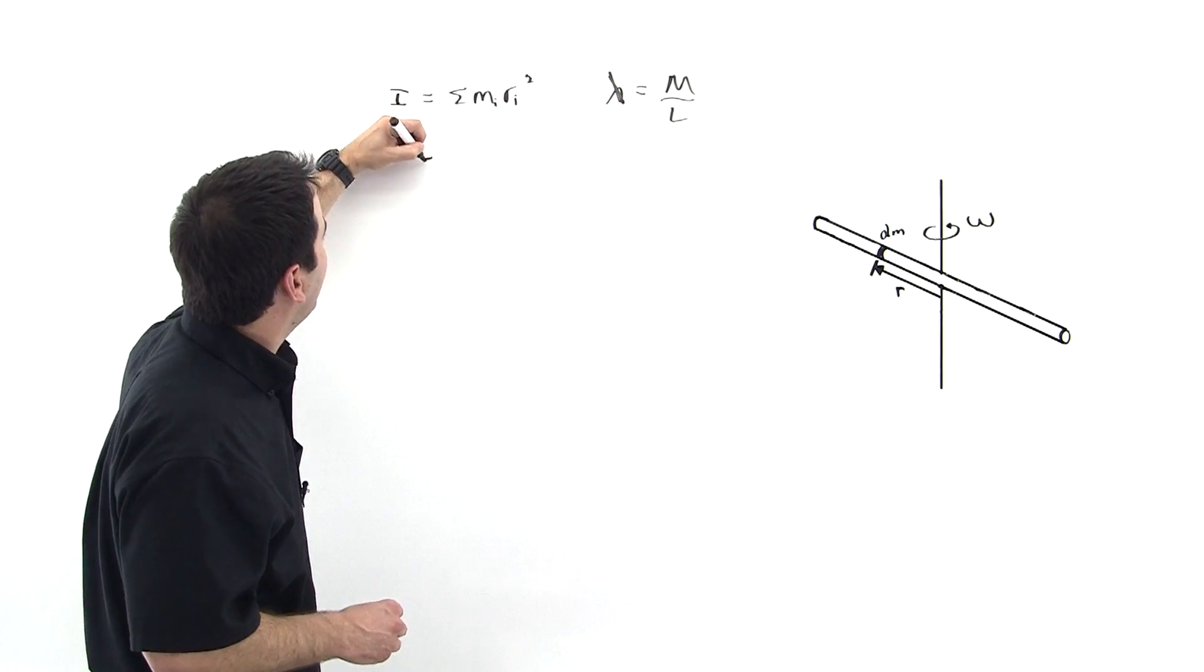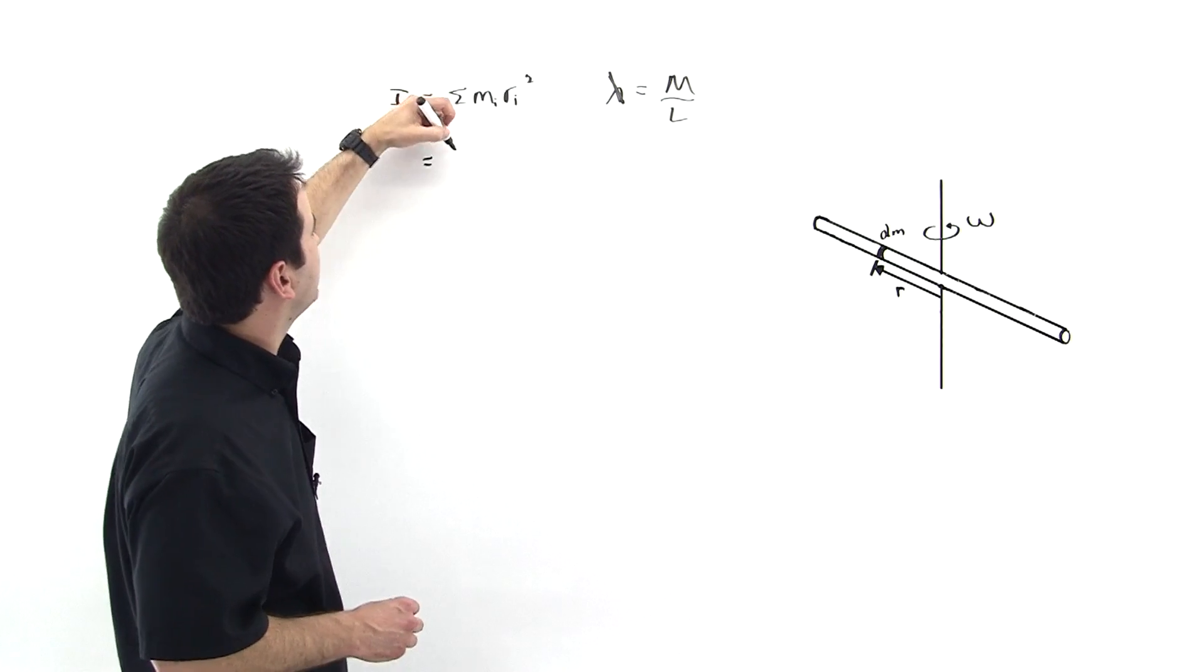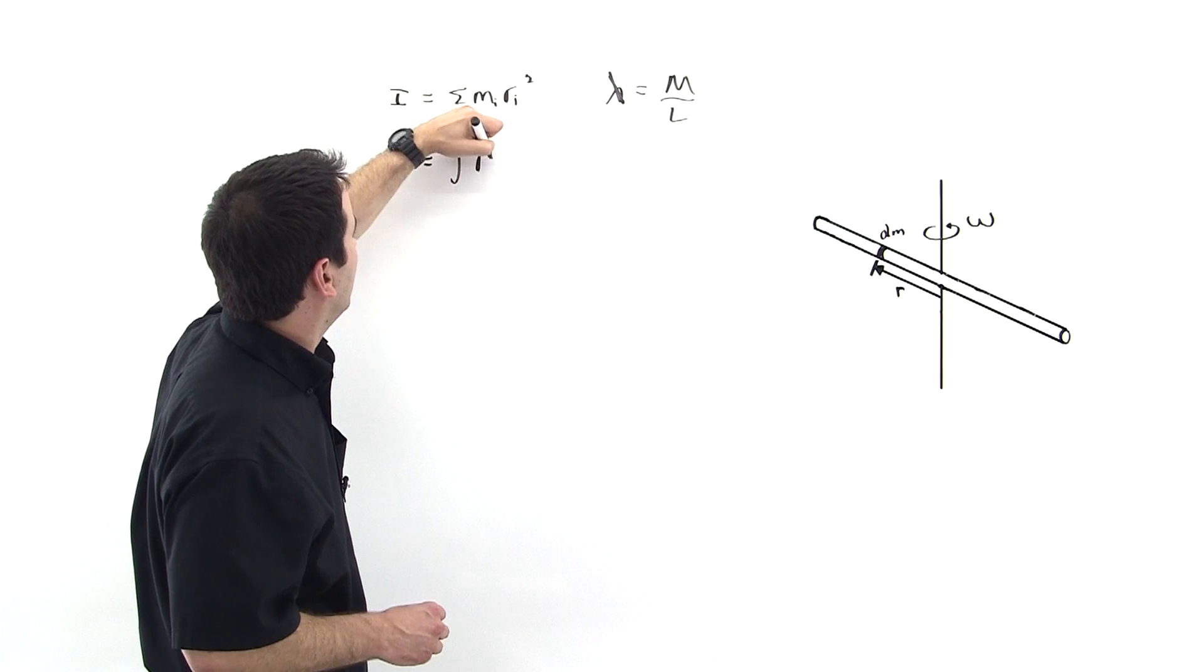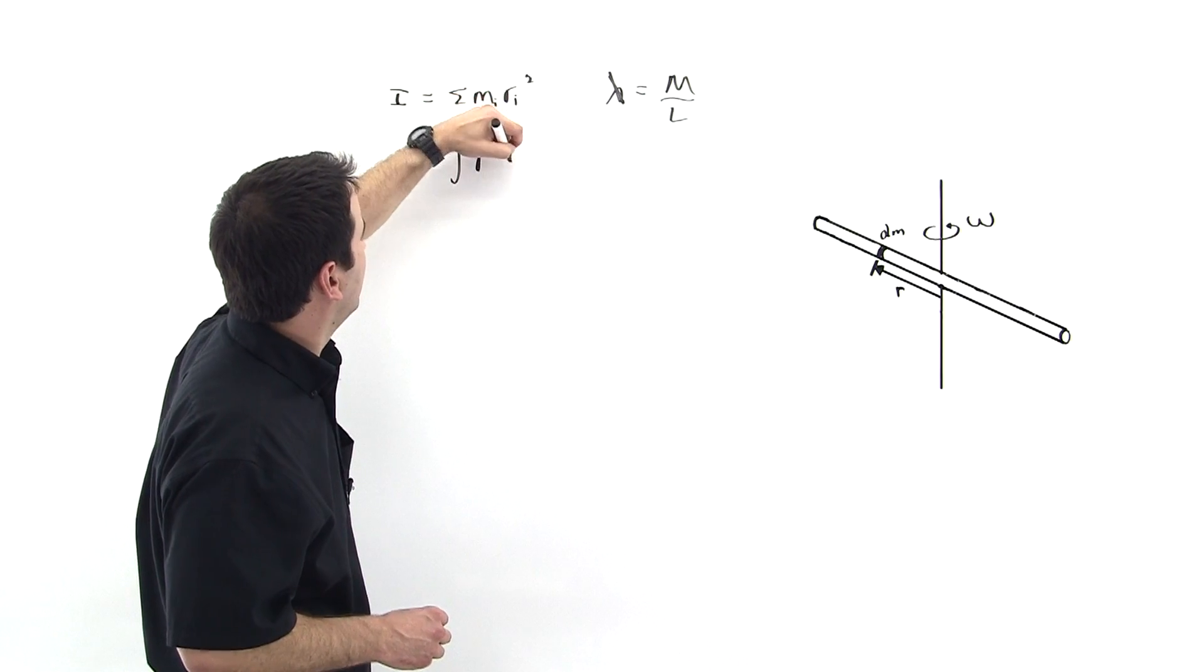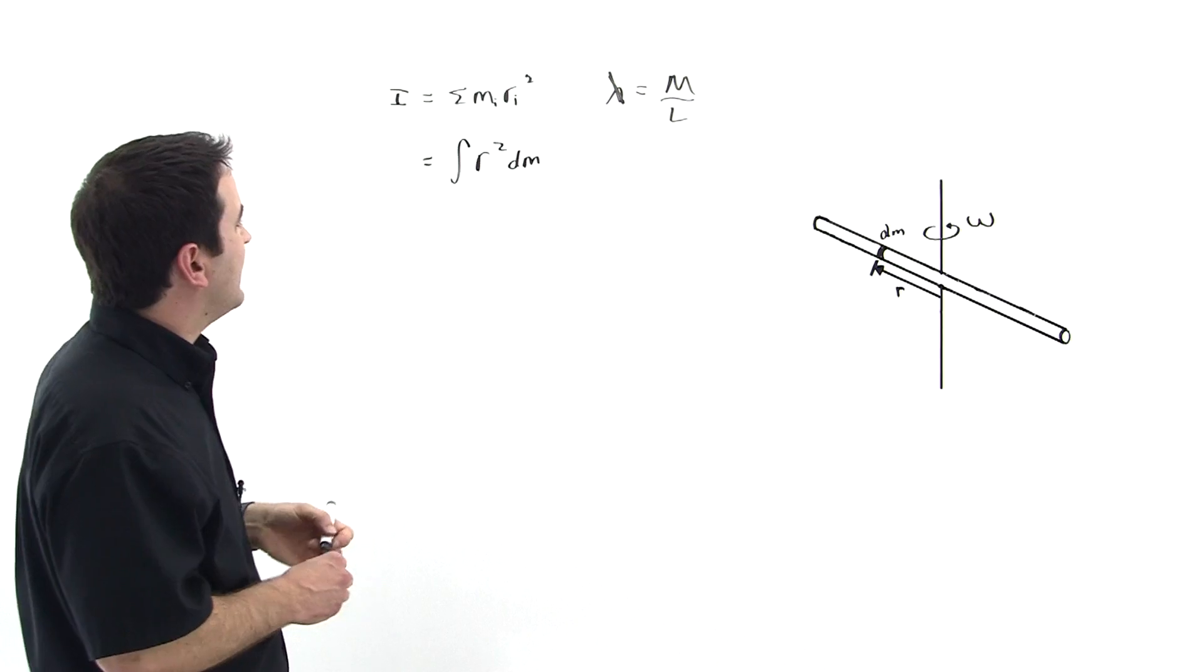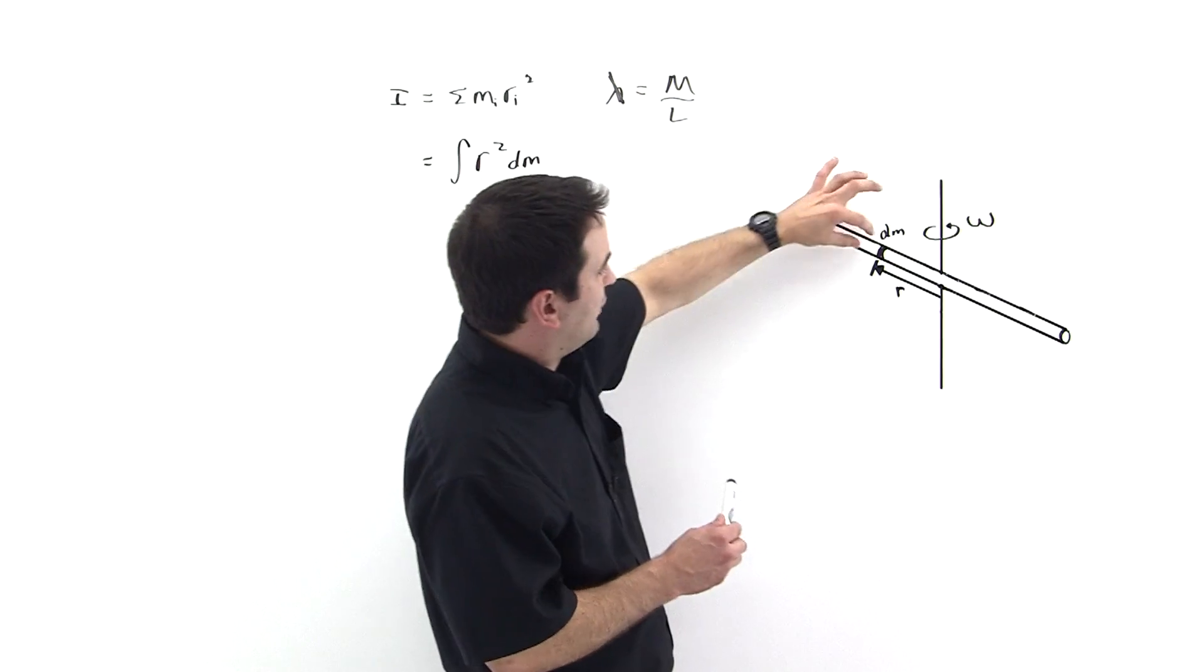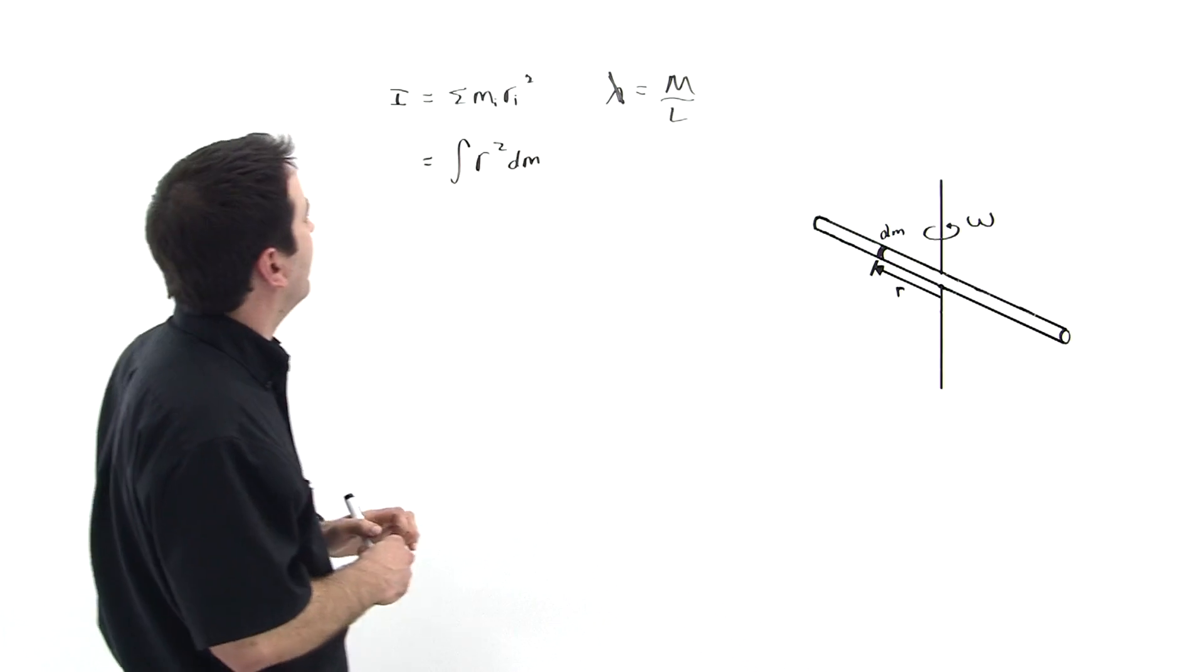Okay, so then to represent this thing continuously, we can represent it by an integral of r squared times dm, where dm is some small element of the rod.